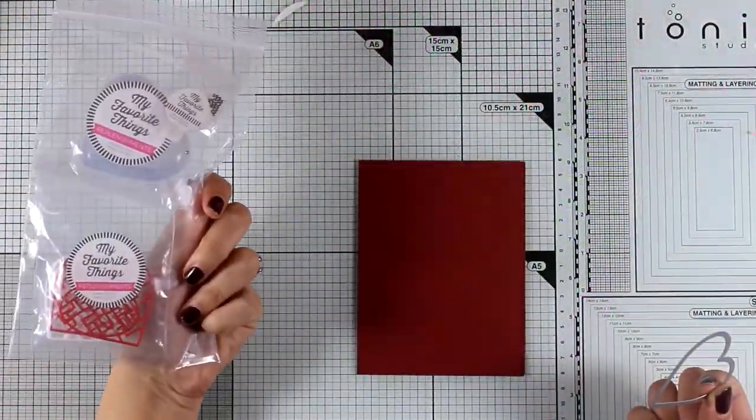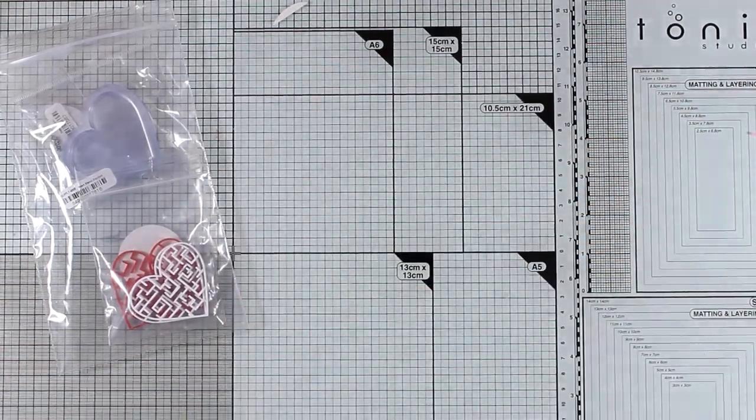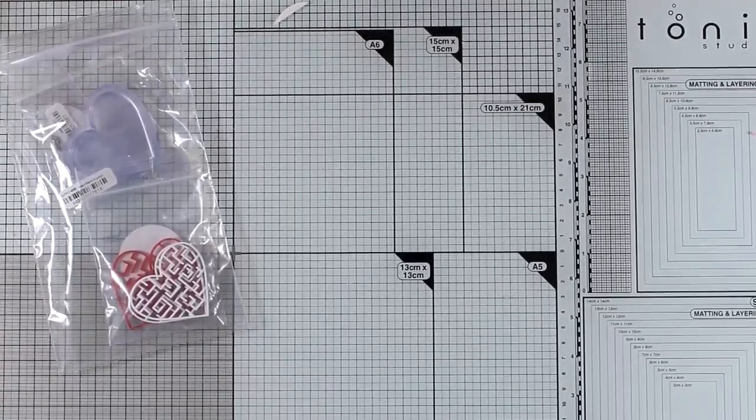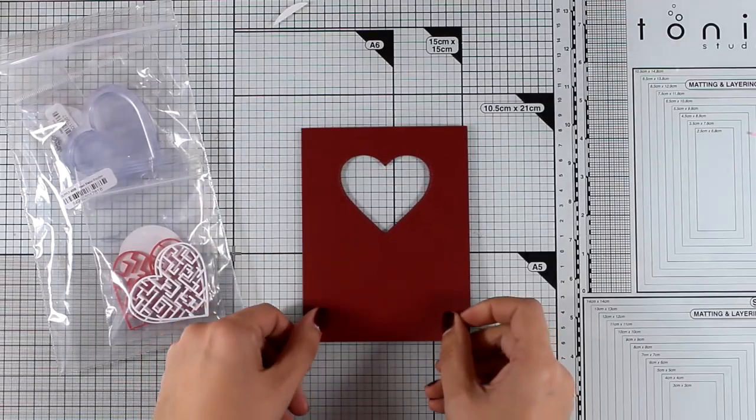For my second card I'm going to put into use all those little pieces for creating an interactive card with a maze and a little ball that goes inside. It's going to be a very simple card just to show you how all these can be used. I have cut out this rectangle panel and used the stitched heart die on top of it to cut out a little window.